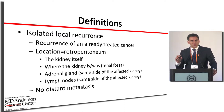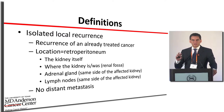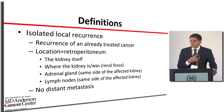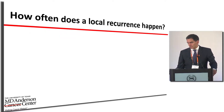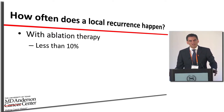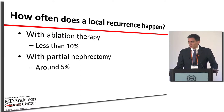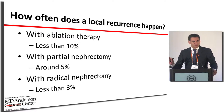When we talk about an isolated local recurrence, it means there is only recurrence in this retroperitoneal area but nothing elsewhere — no bone, liver, or lung metastases. With ablation therapy, if patients are selected well, the recurrence rate should be less than 10%. With partial nephrectomy, less than 5%, and with radical nephrectomy, less than 3%.